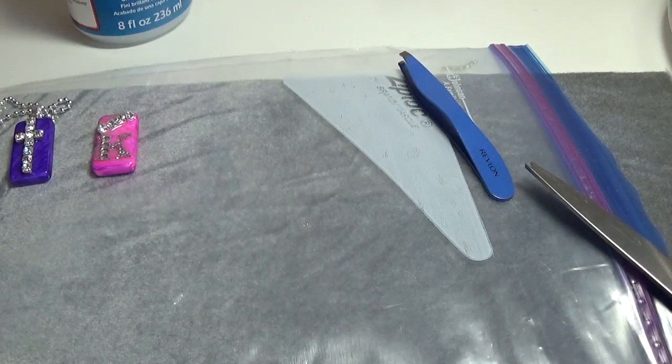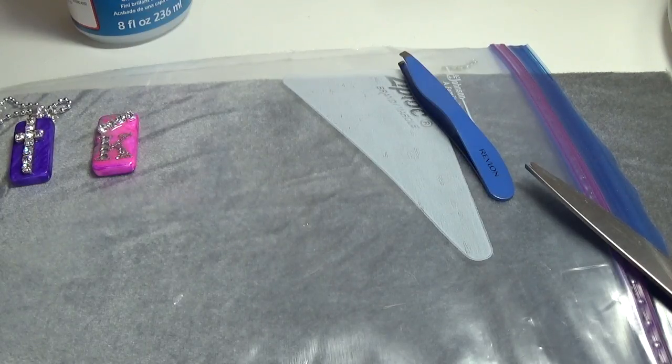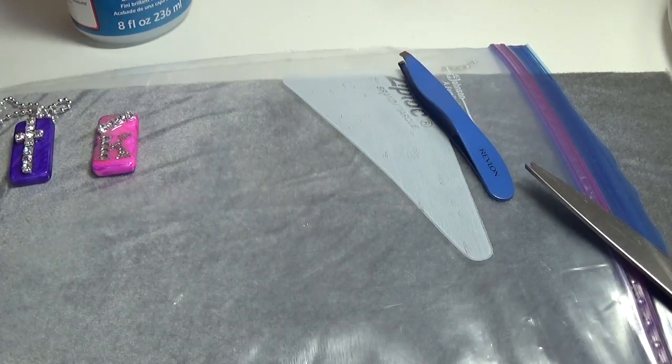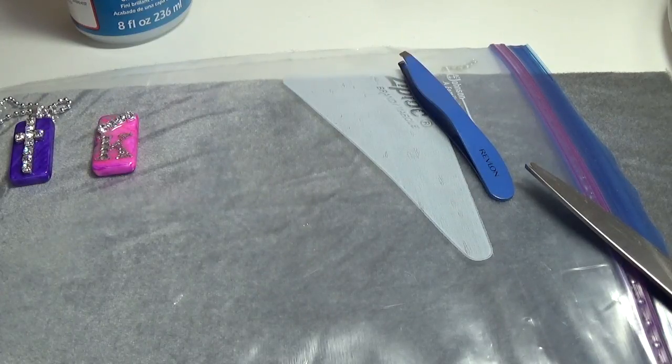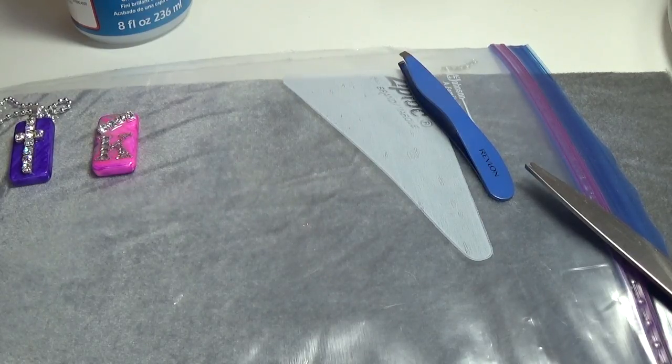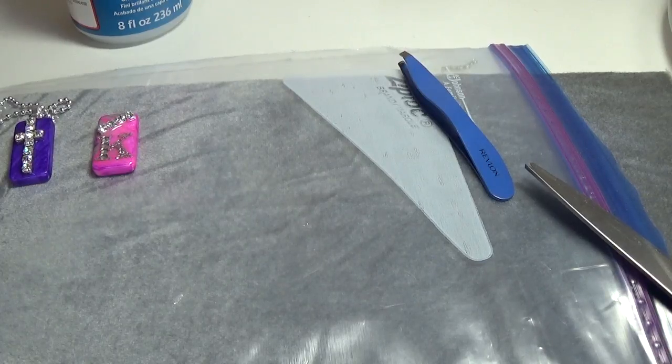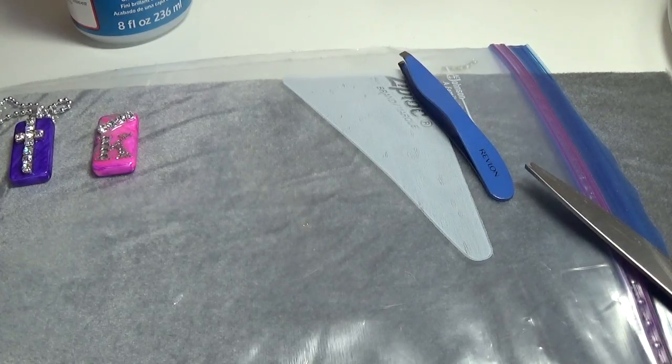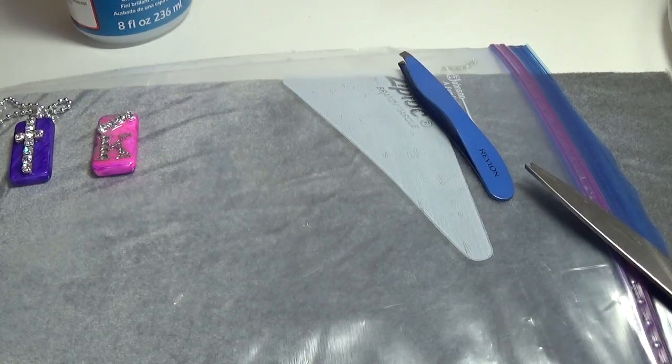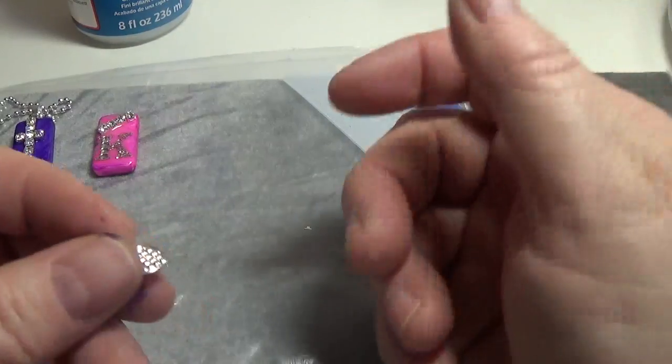And it says on the back of the bottle of the Mod Podge or at the back of the jar that it takes four weeks for it to cure. But I think they're talking about furniture because a lot of times people use this to gloss over the top for furniture, coffee tables or whatever. Because this, to me, dries pretty quickly and it's pretty rock solid after a couple of days. So anyway, that's just my opinion.